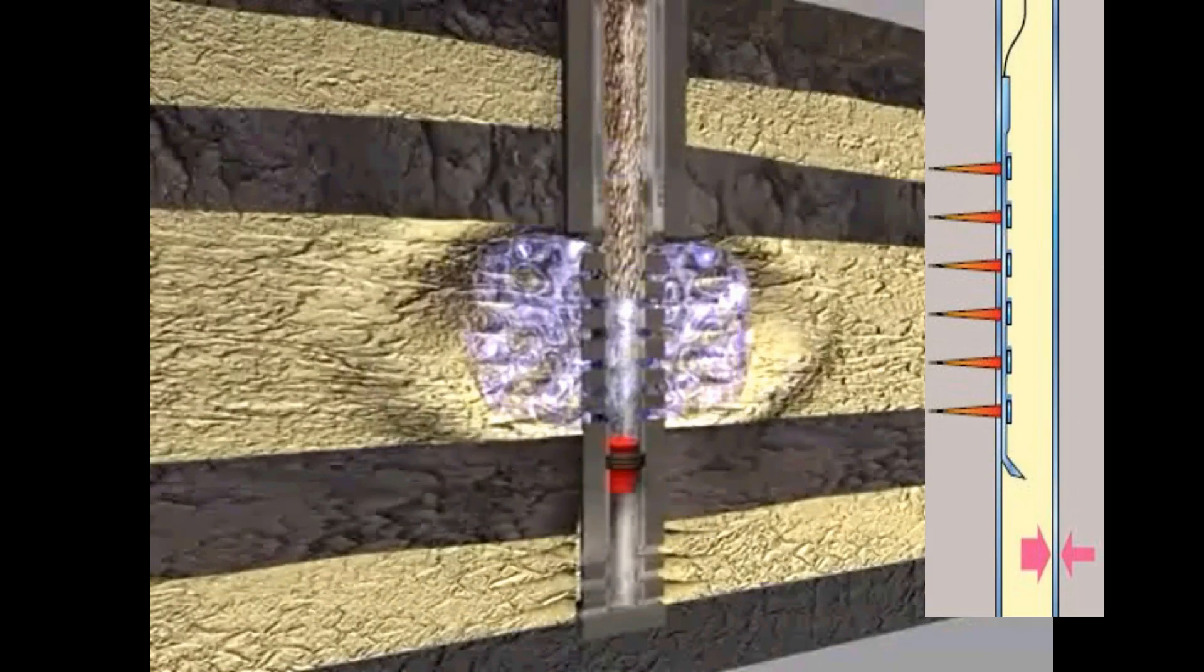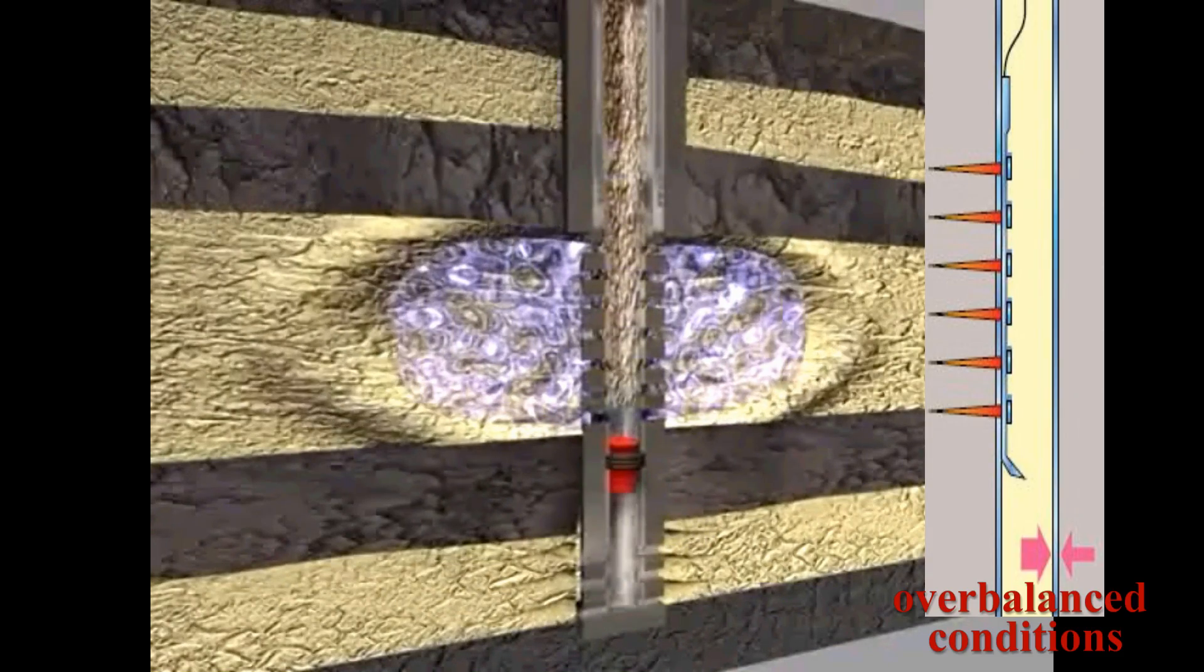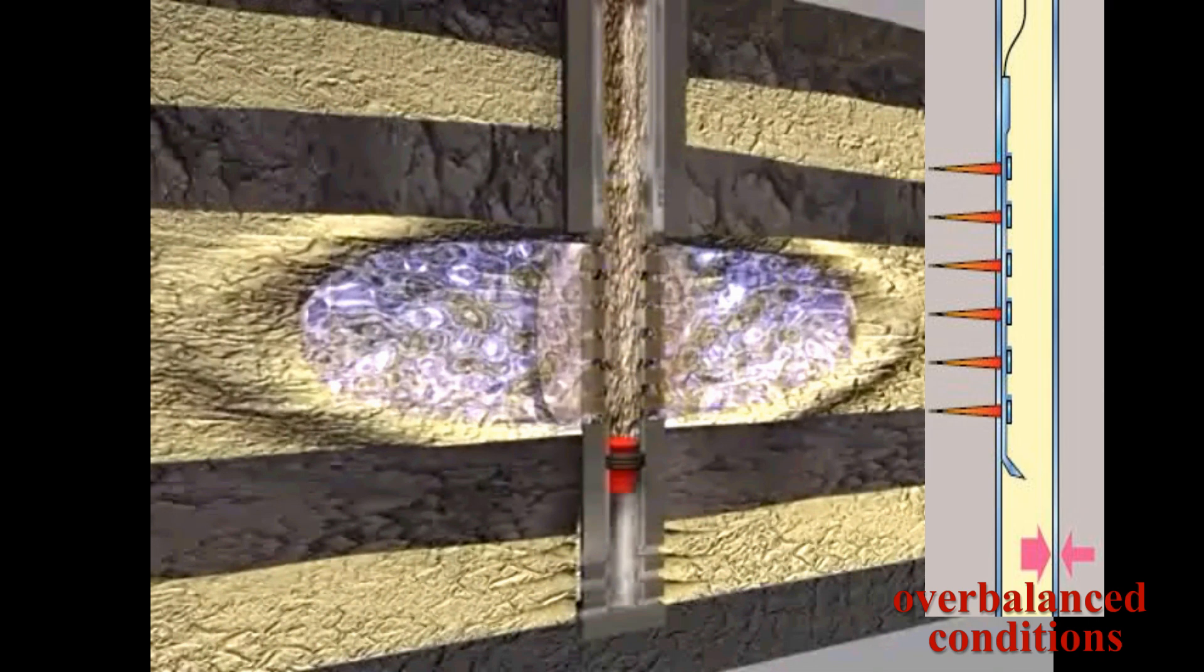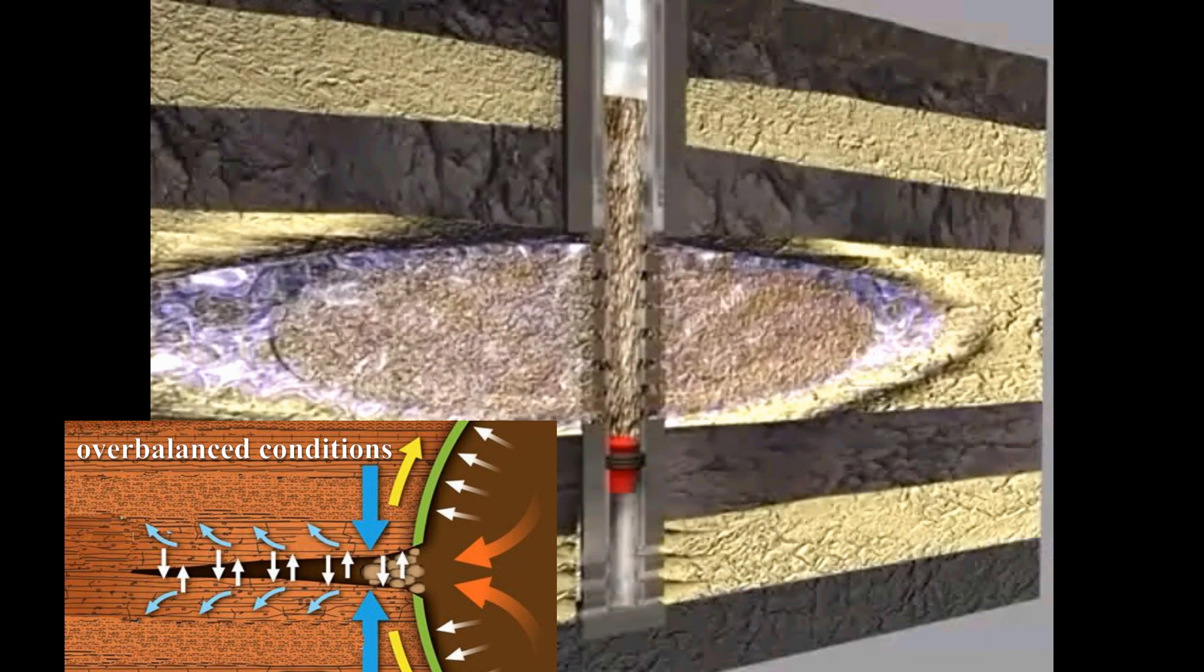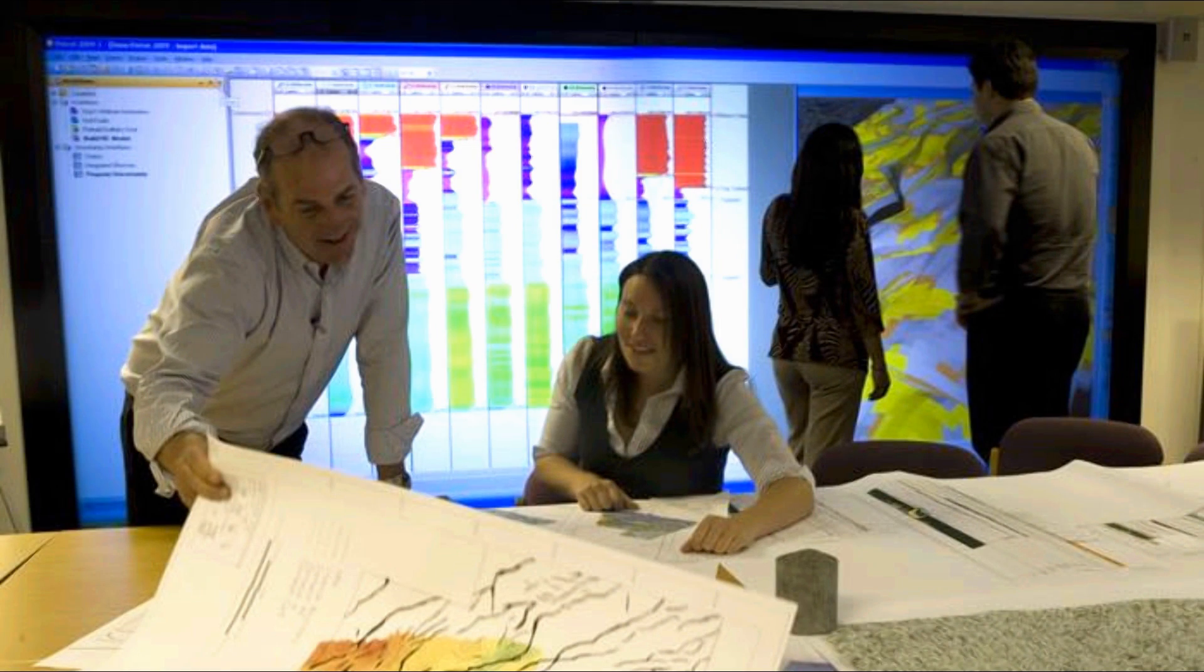With the well prepared for production, we can now return to finalize any additional treatment that is needed before actual production begins. Earlier in the lecture, we got as far as perforating in over-balanced conditions. Highlighting the damage to the vicinity around the wellbore that it can cause, we mentioned that the engineering team may prefer to perforate in another way.